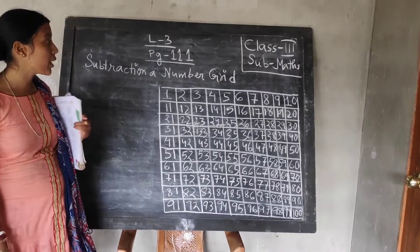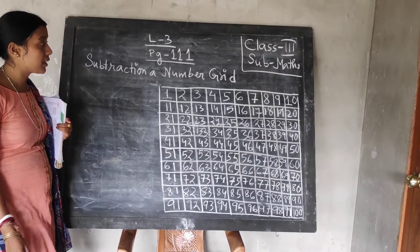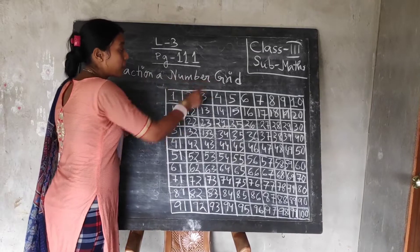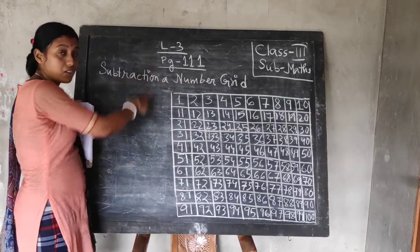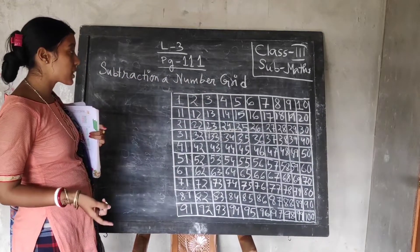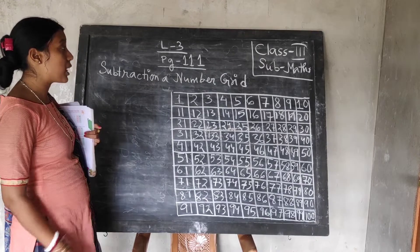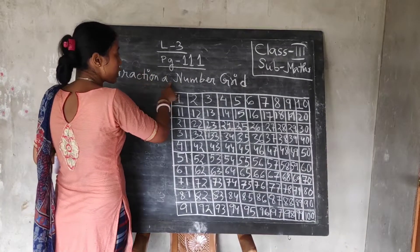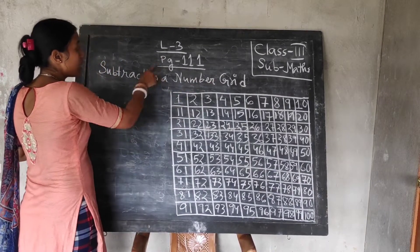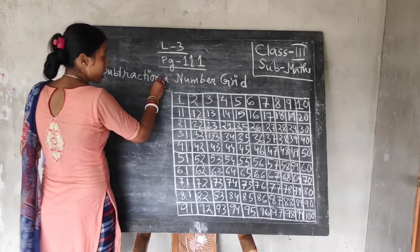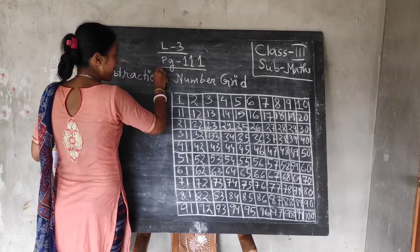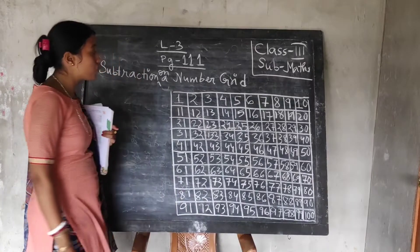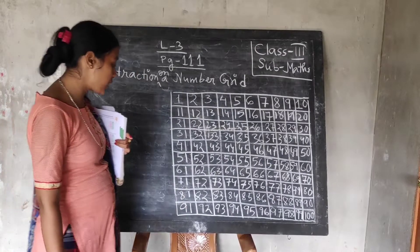Hello students. Today we are starting subtraction on a number grid. We have started our lesson 3 before only. In our previous class, we have done some sums. Today we will be doing subtraction on a number grid. Check out your page number 111 and see how to do subtraction on a number grid.